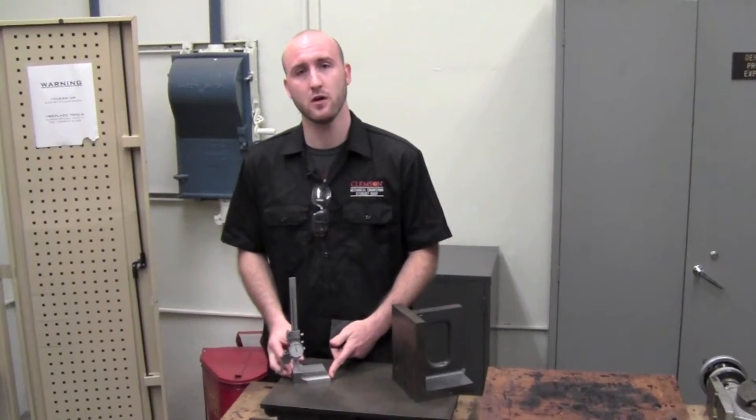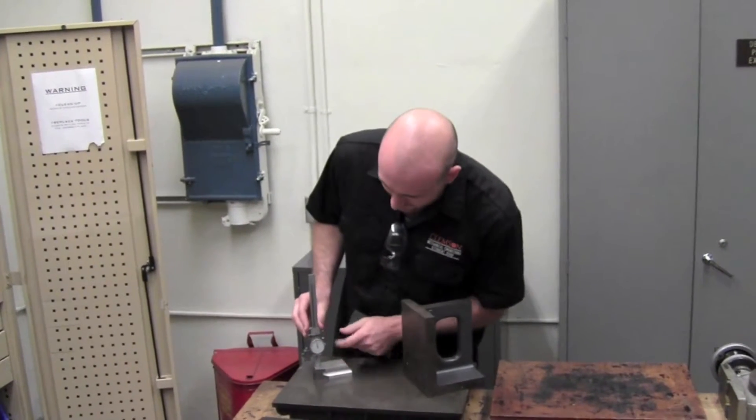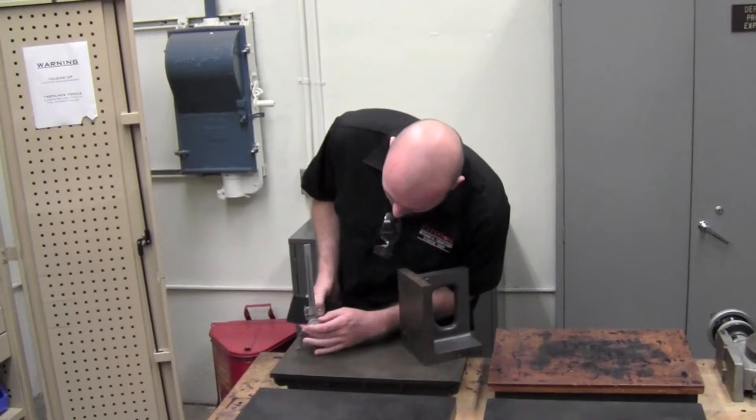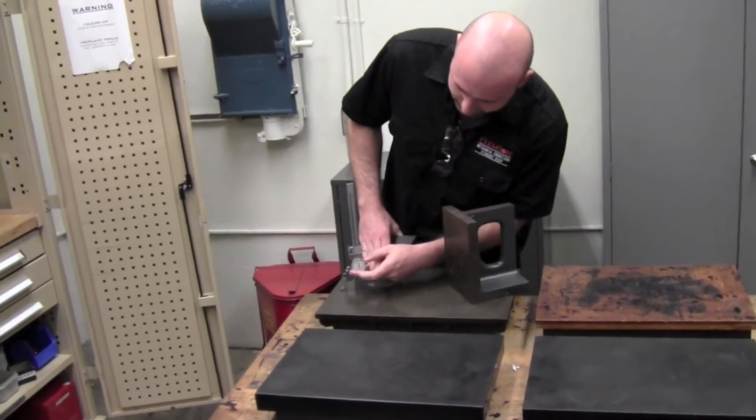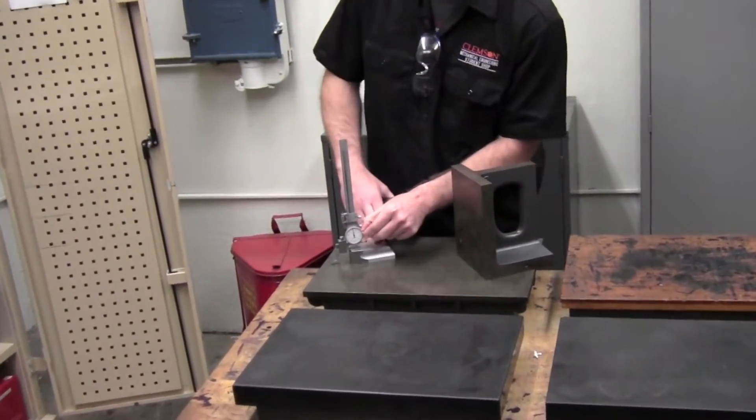We also have a height gauge here with a scribe on it. Make sure that before you use your height gauge that it's zeroed out. You can zero out your height gauge just by turning the dial here on the front.